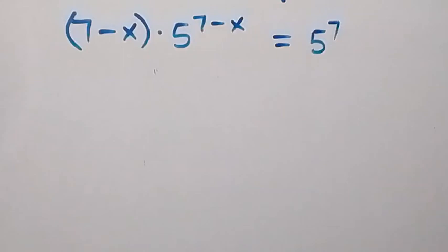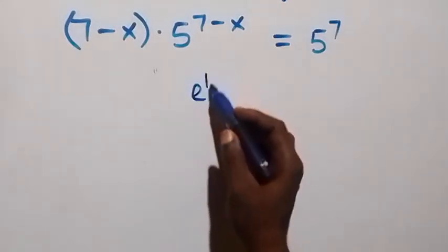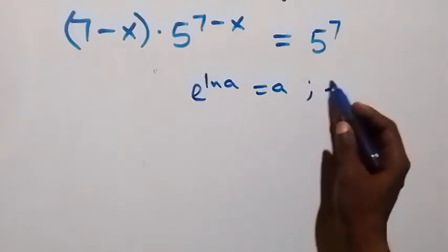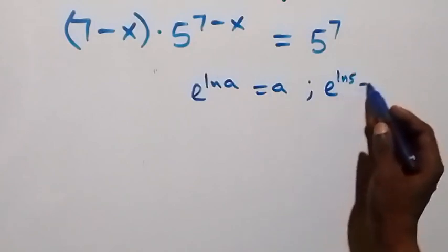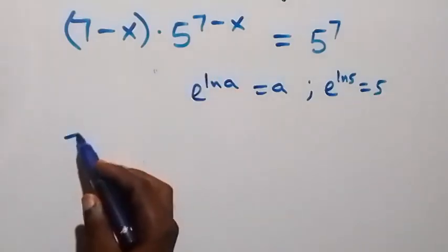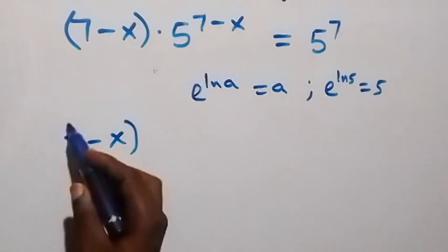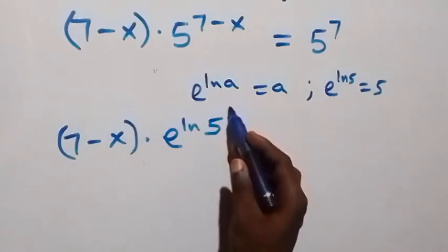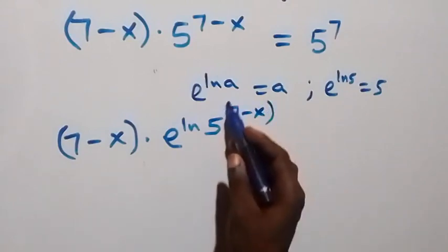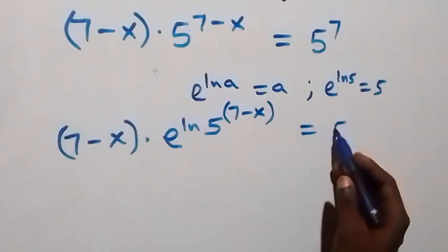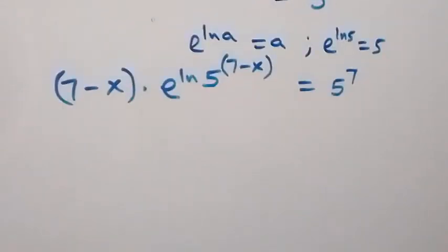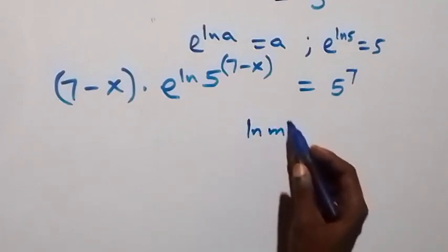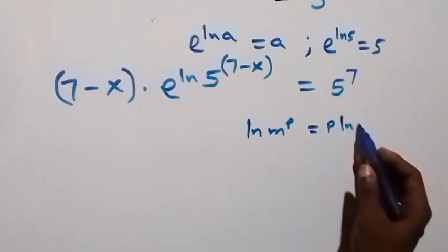Next step: we can write 5 using the identity e^(ln a) = a, so 5 can be written as e^(ln 5). This equation becomes (7 minus X) multiplied by e^(ln 5) raised to the power (7 minus X), equals 5 raised to power 7. Using the power rule of logarithms, ln raised to power P equals P times ln m.